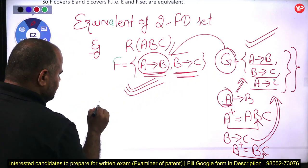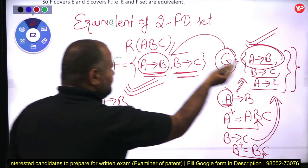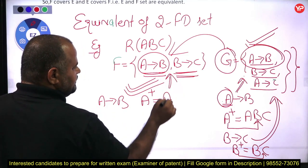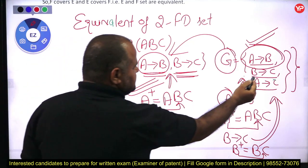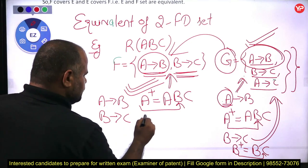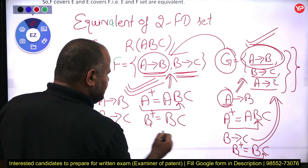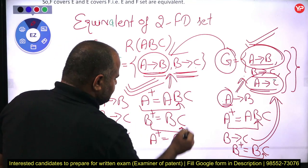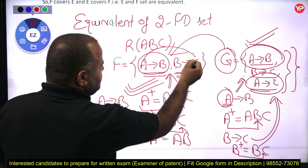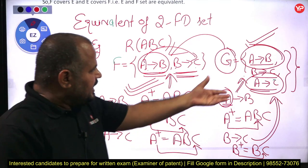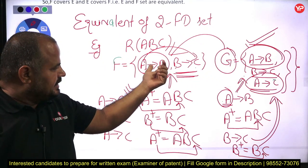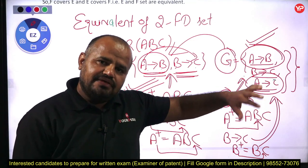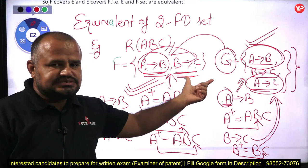In the same manner, I have to check whether each FD of G is a member of F. A determines B: find A closure using F — A, A determines B, so yes. Check B determines C: B closure is B, B determines C — yes. Check A determines C: find A closure using F — A, A determines B, B determines C by transitive property, so C is included. Yes, A determines C. It means every FD of G is a member of F and every FD of F is a member of G, meaning F covers G and G covers F — so both FD sets are equivalent.